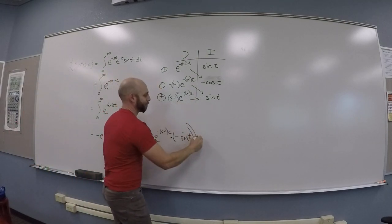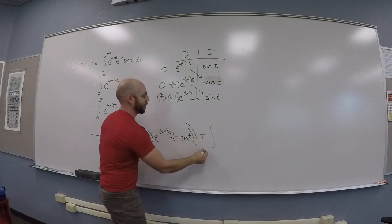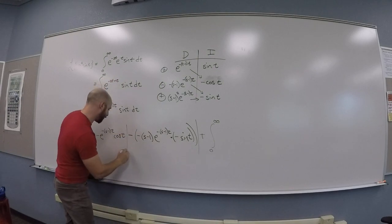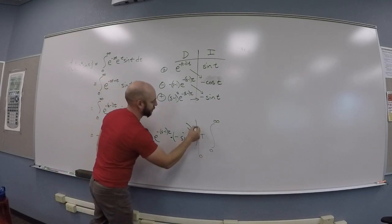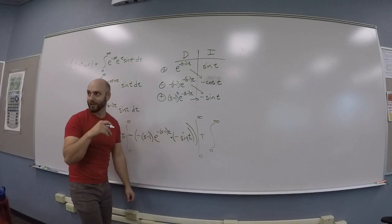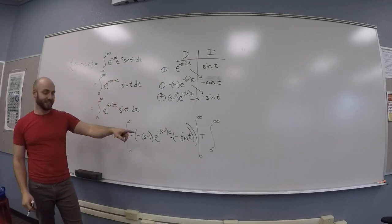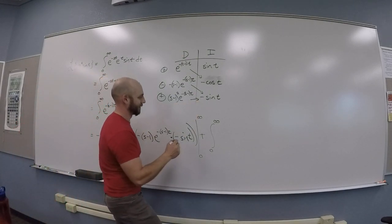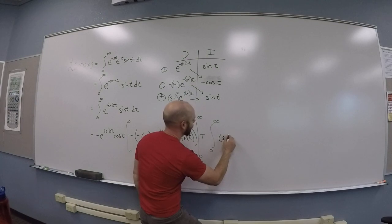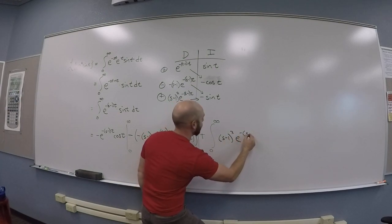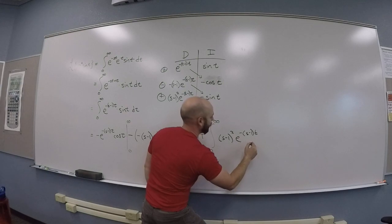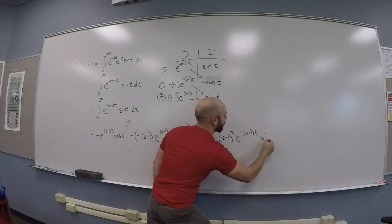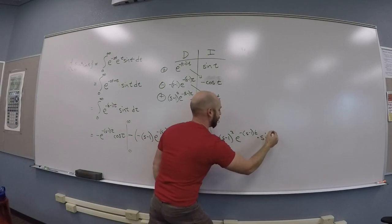Plus the integral. Plus the integral from, and again, zero to infinity. These guys all need to be evaluated from zero to infinity by the by. Otherwise, you'll get t's in the answer. And then this last integral should be this thing times that thing, which is s minus one squared e to the minus s minus one t times minus sine. It's a minus sign.